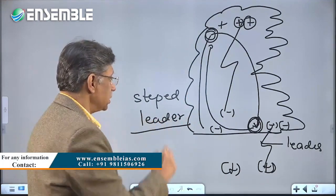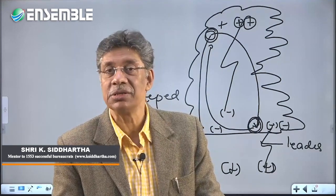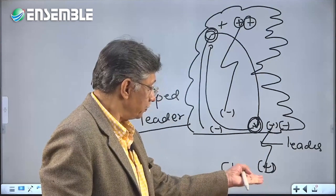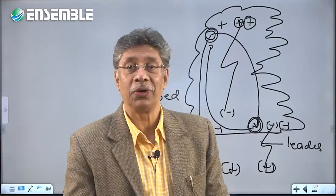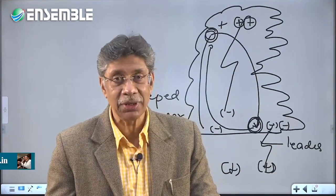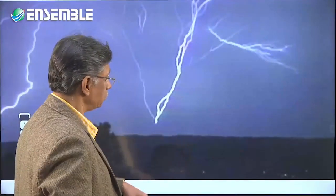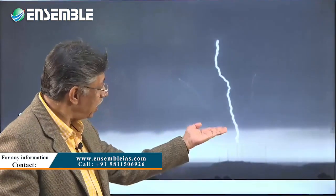The stepped leader is met by a positively charged return stroke from the ground. The return stroke forms a narrow conducting path about 10 centimeters in diameter between the cloud and the ground. Electrons start flowing, neutralization occurs, and this is how it takes place — moving from the ground to the cloud base.